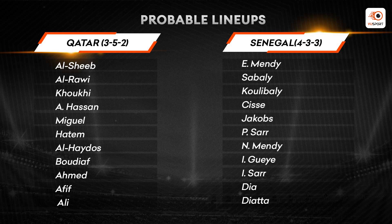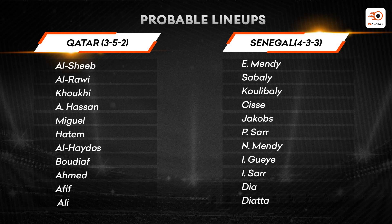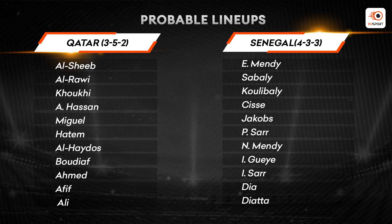Senegal should line up in a 4-3-3. Keeper Edouard Mendy. Back four mein right back rehenge Yusuf Sabaly — jo ki bohat impressive the against Netherlands, he bombed forward and posed attacking threat as well. Defense mein main man Koulibaly, Cisse, and Jakobs at left back. Midfield three mein rehenge Saar, Nampalys Mendy, and Idrissa Gueye. Front three mein star player Ismaila Sarr, with Dia and Diatta in support.